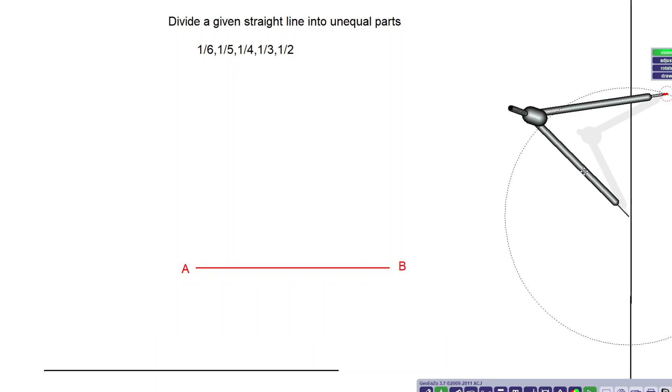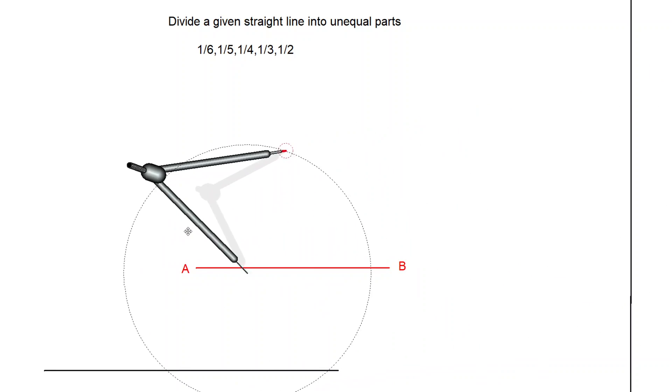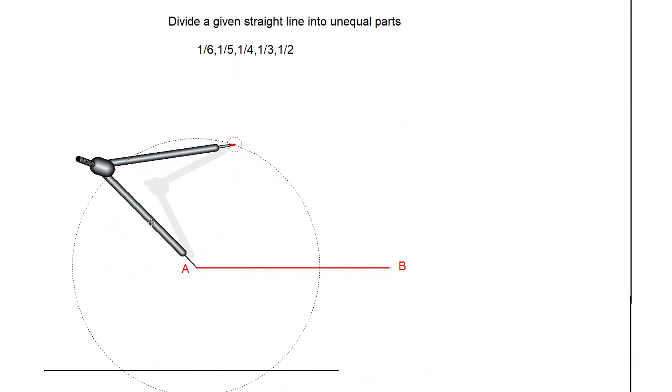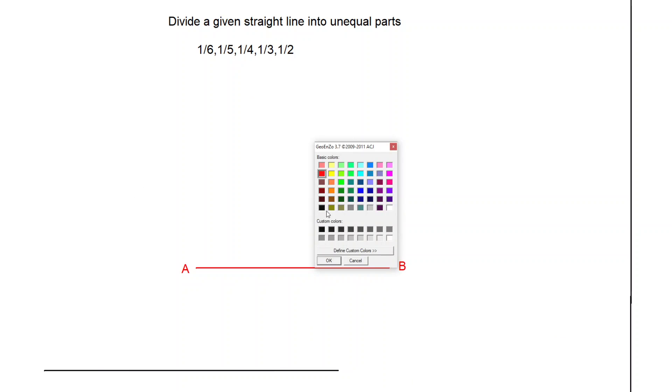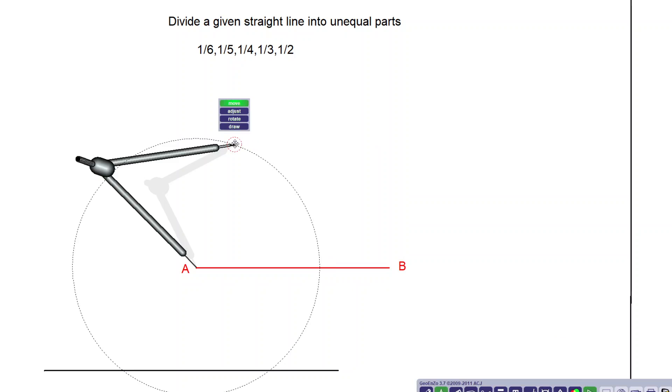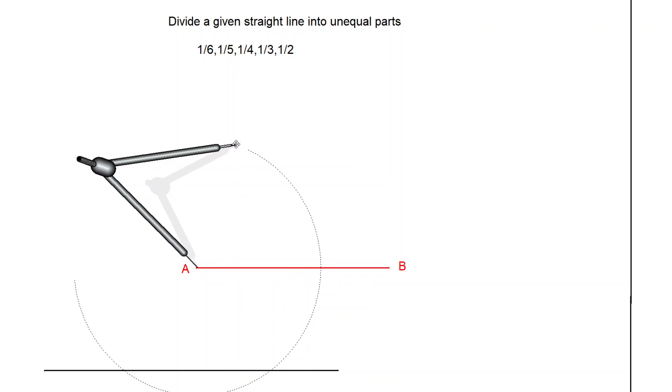To make it equal length, what I will do, I will take the compass. I will put the compass at point A and draw a curve. I am taking a different color here. Draw a curve from point A on this side. Fix it properly at A.